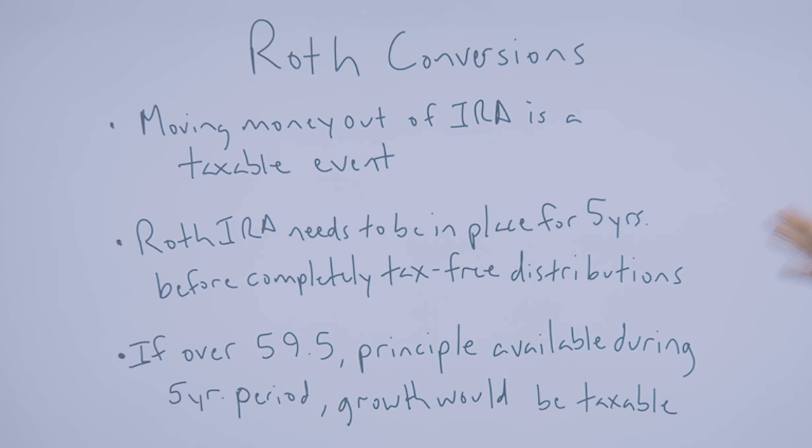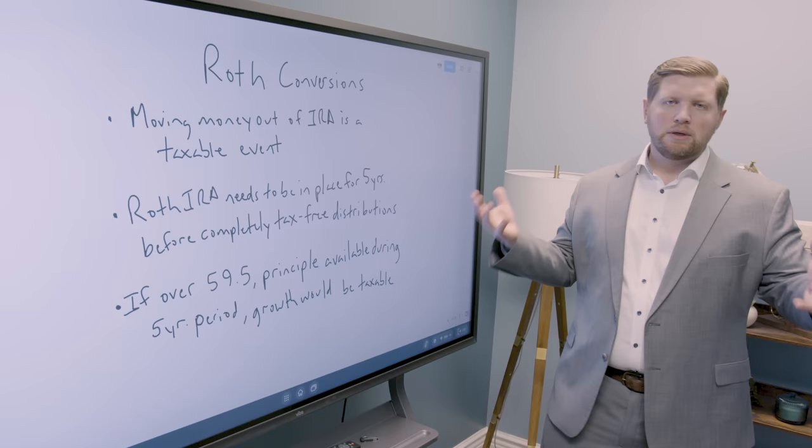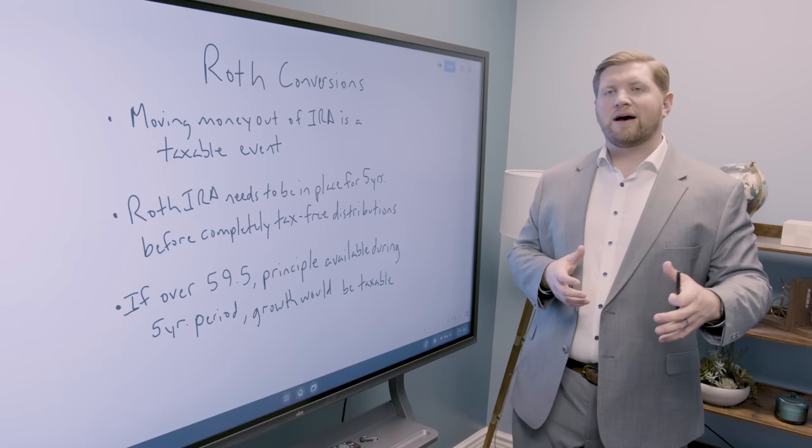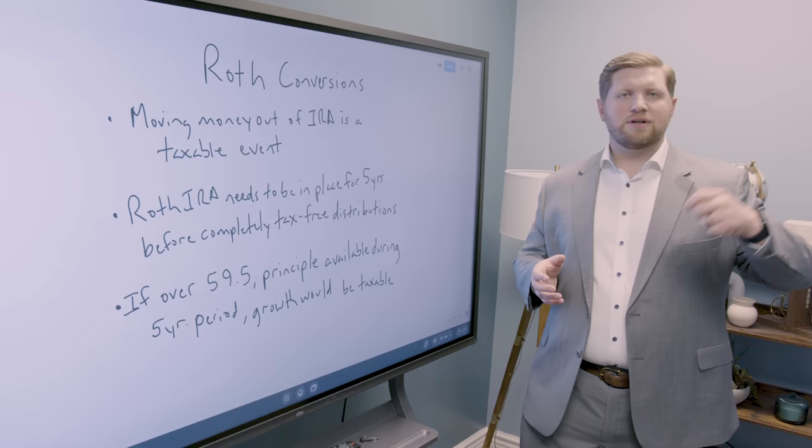Now Roth IRAs need to be in place for five years before the contributions and the growth are tax-free. But in this case, since we are over the age of 59 and a half, when you make this conversion, your principal will be available to you during the five-year period, but the growth on that money would be taxable. So if you, for example, if you converted $100,000 after taxes have been taken out and it grows to $105,000 during that five-year period, you could take up to $100,000 with no taxes. If you got into that extra $5,000, anything over your original amount would be taxable to you. And then after the five years, obviously it would be tax-free.